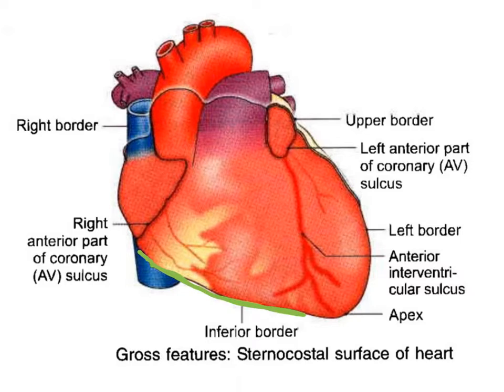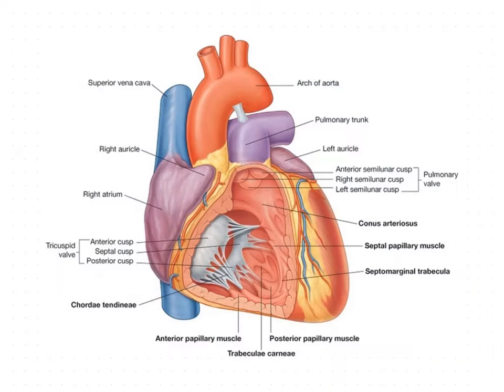The external features of the right ventricle include two surfaces: the anterior sternocostal surface and the inferior diaphragmatic surface. Internally, it has two parts, which we will see in the internal structure of the right ventricle.